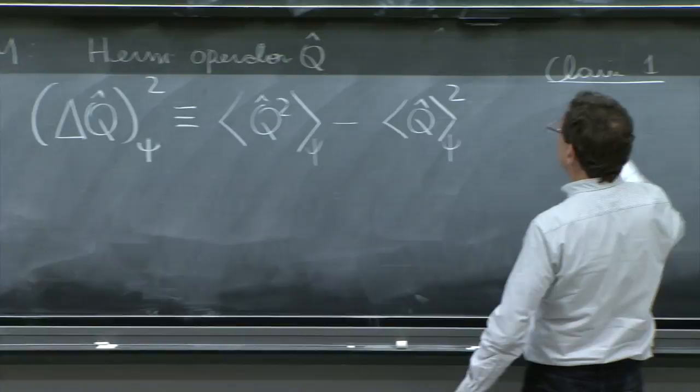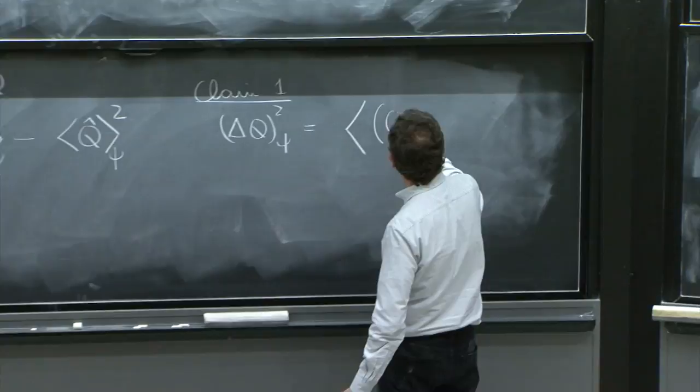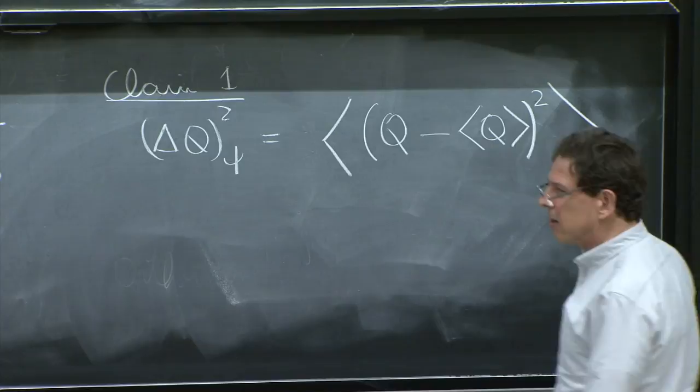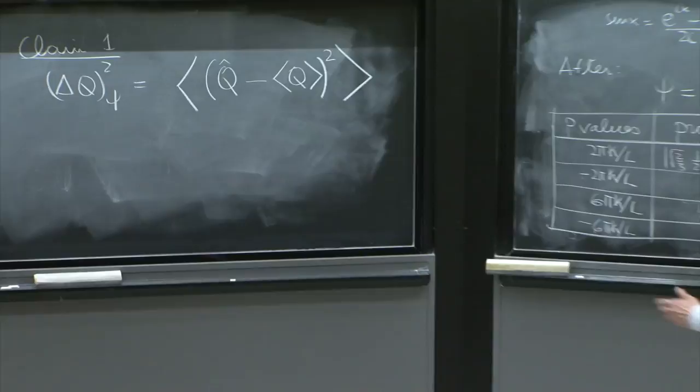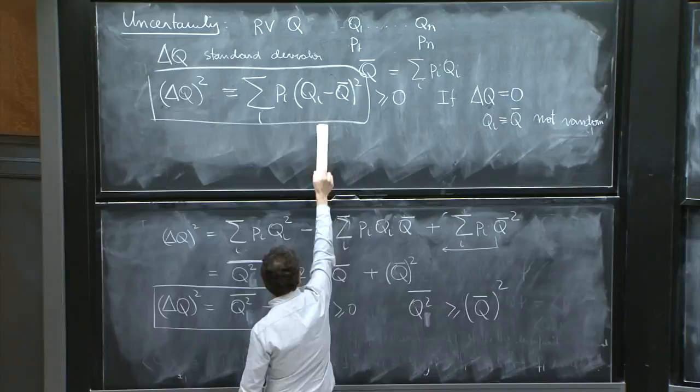Which is claim 1. That delta q squared on psi can be written as the expectation value of q minus the expectation value of q squared like that. Look. It looks funny. And we'll elaborate this. But the first claim is that this is a possible rewriting. You can write this uncertainty as a single expectation value. This is the analog of this equation in quantum mechanics.